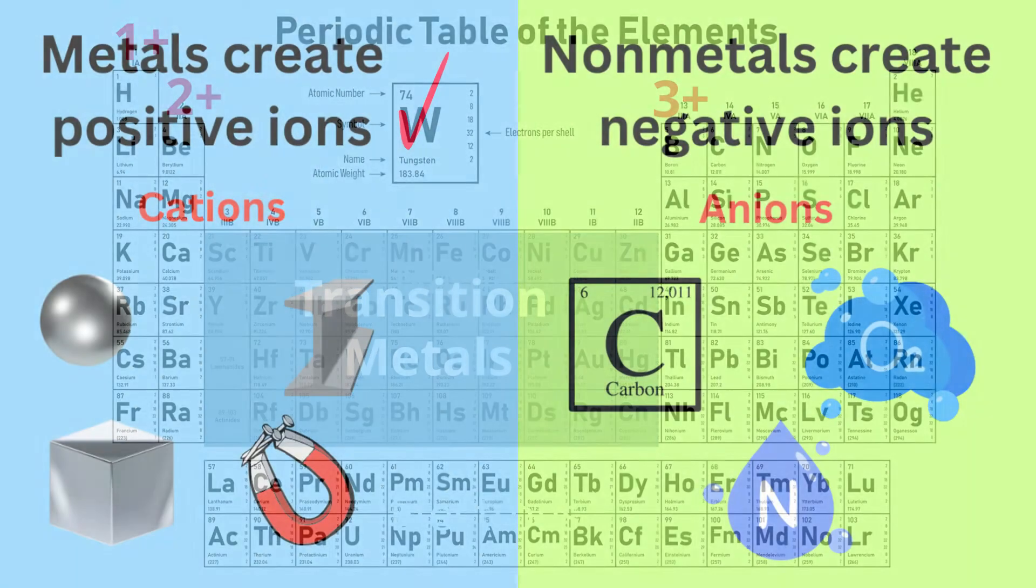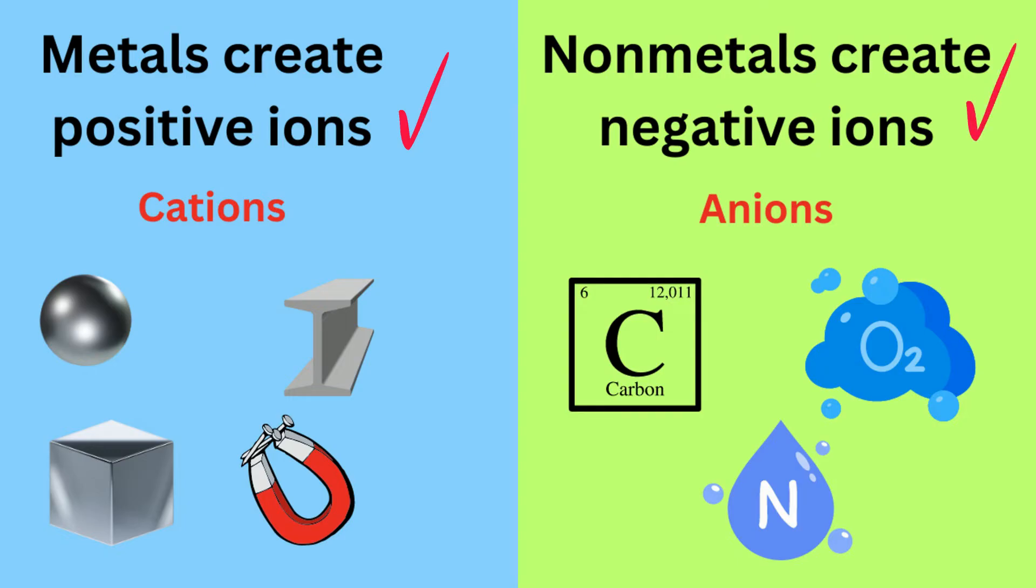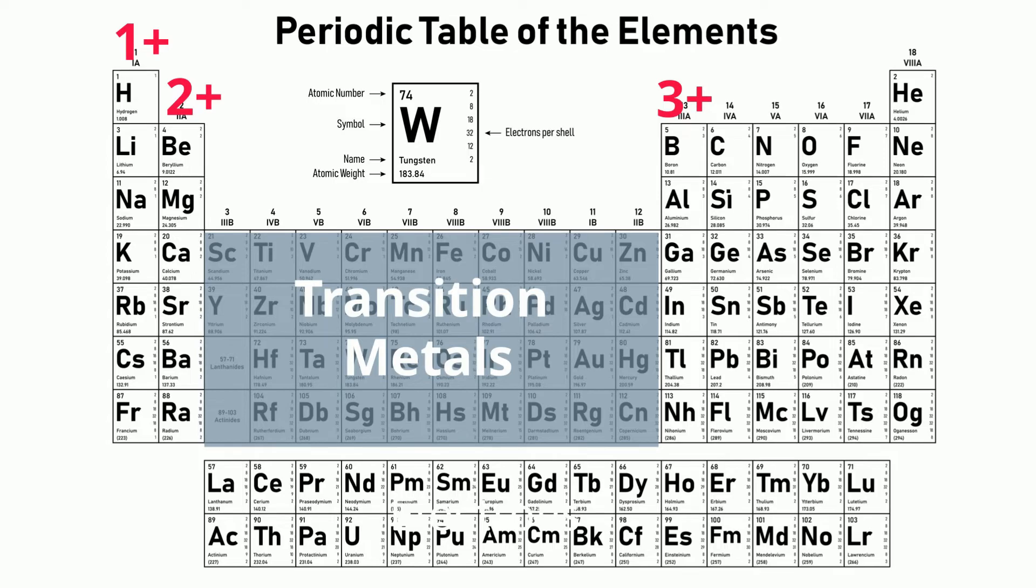Remember, metals form positive ions and non-metals form negative ions. Let's jump over to 7A. All group 7A non-metals form 1 negative ions by gaining 1 electron. All non-metals in group 6A gain 2 electrons and create 2 negative ions.